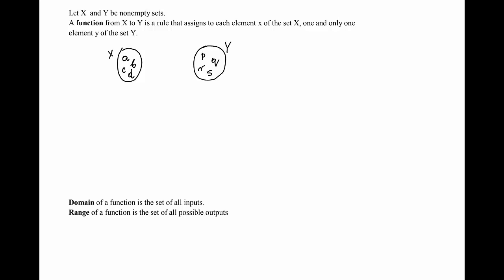Let's look at an example. Suppose the set x consists of the elements a, b, c, d and the set y consists of the elements p, q, r and s. Then we can make the following assignment: to a we assign p, to b we assign p, to c we assign r, and to d we assign q. To every element of the set x I assign one and only one element of the set y.